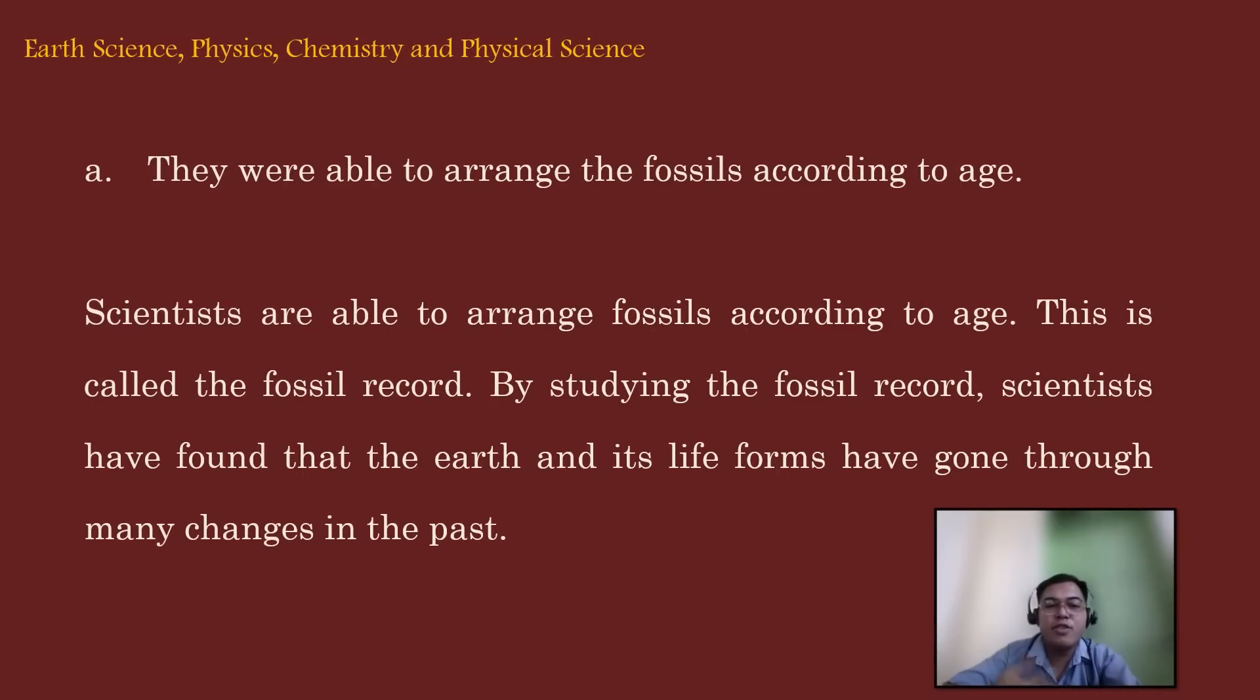The correct answer for this item is letter A. They were able to arrange the fossils according to age. Now, scientists are able to arrange fossils according to age. This is called a fossil record. By studying the fossil record, scientists have found that the earth and its life forms have gone through many changes in the past. Also, fossils have taught us how and when rock layers have formed. And they have also helped scientists learn about life forms to have come and gone. Now, fossils have even taught us about the climate and the earth long ago.